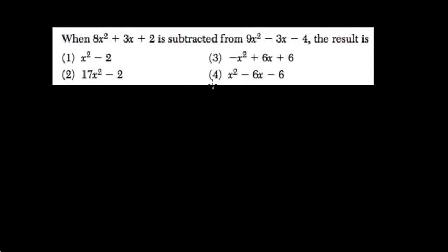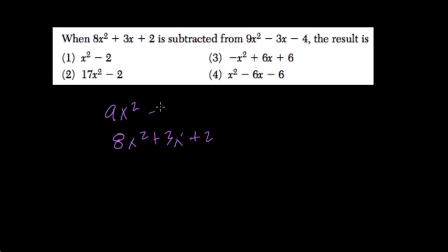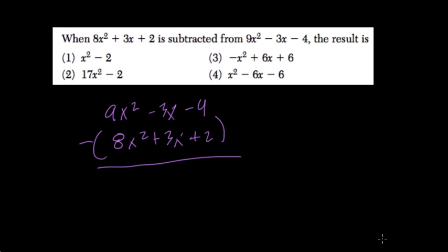Now we subtract. We're subtracting 8x squared plus 3x plus 2 from 9x squared minus 3x minus 4. So I'm going to subtract this way — not usually the way I do it, but we'll try it out.